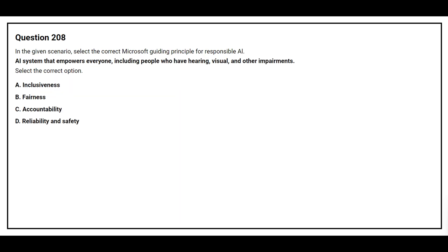Question 208: Select the correct Microsoft guiding principle for responsible AI. An AI system that empowers everyone, including people who have hearing, visual, and other impairments. Option A: Inclusiveness. Option B: Fairness. Option C: Accountability. Option D: Reliability and safety. The correct answer is Option A, Inclusiveness.